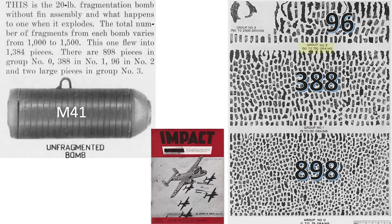Another advantage to using fragmentation bombs over general purpose bombs is discussed on this page from a May 1945 Assistant Chief of Air Staff Intelligence document titled Impact: U.S. Tactical Air Power in Europe. Advancing ground troops want enemy positions destroyed but do not want roads cratered and made unusable. Fragmentation bombs excel in causing enemy casualties and psychological issues without road cratering. Let's take a look at a few case studies where cluster fragmentation bombs were used effectively.